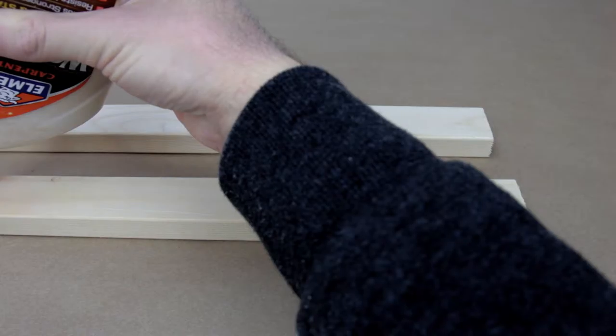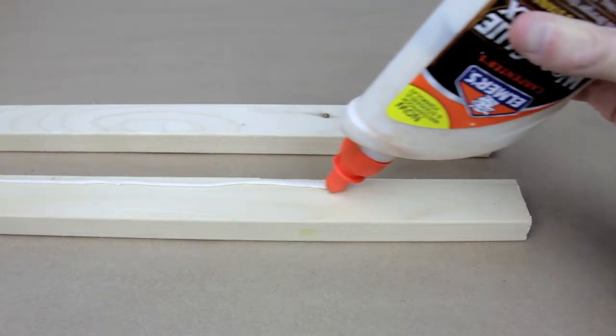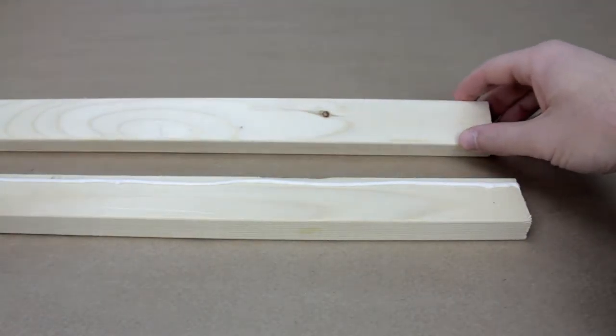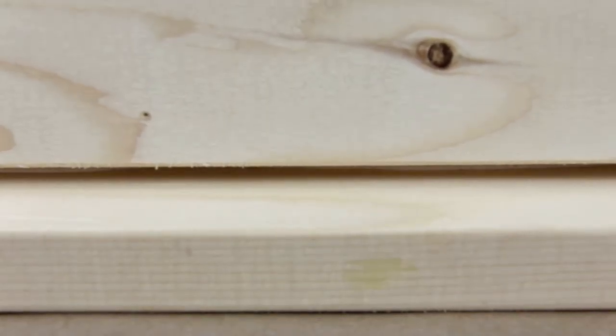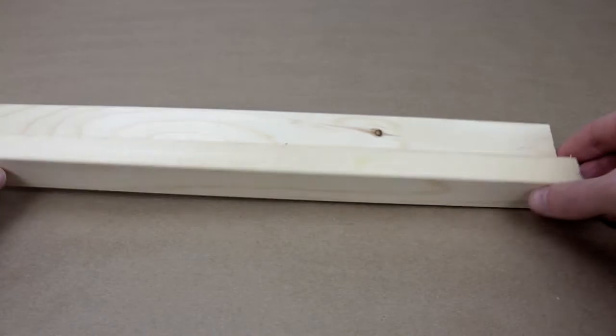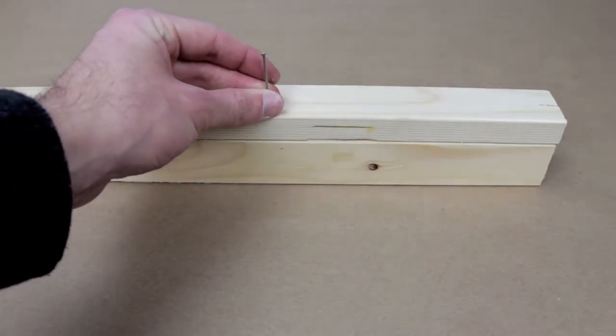Glue one of the thin edges of the wood to a thick edge to make an L shape. This will help keep the frame from warping and make it more sturdy. Hammer and nail every foot of the wood to keep it together while it dries.